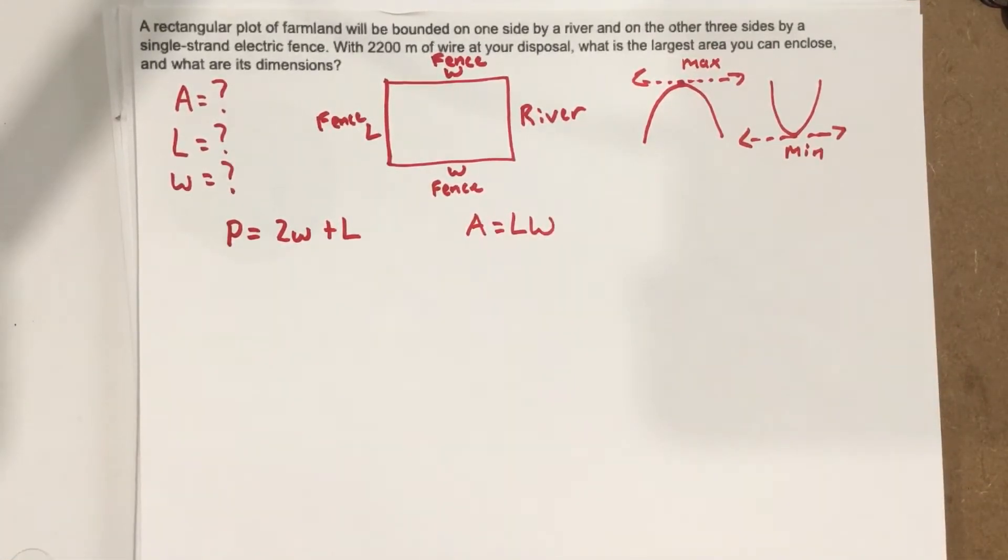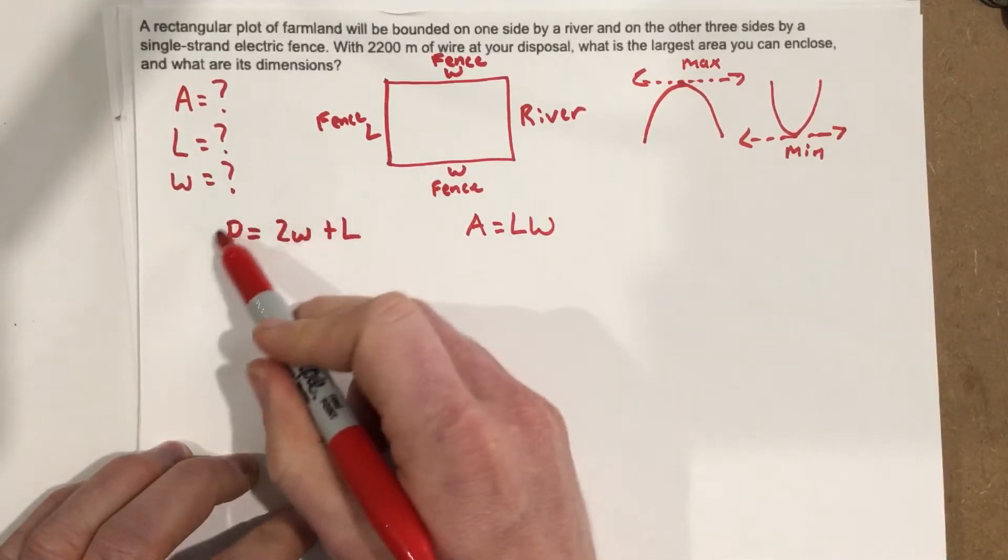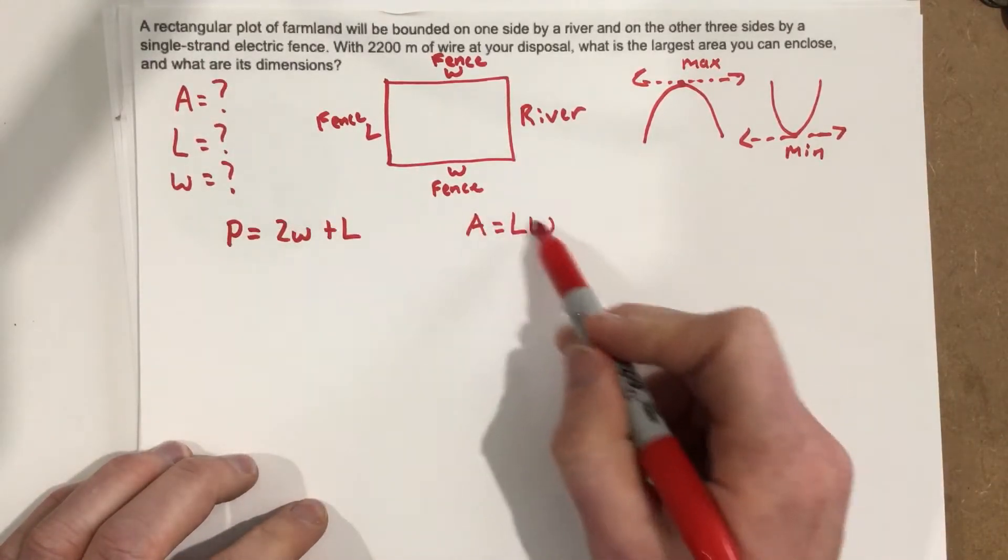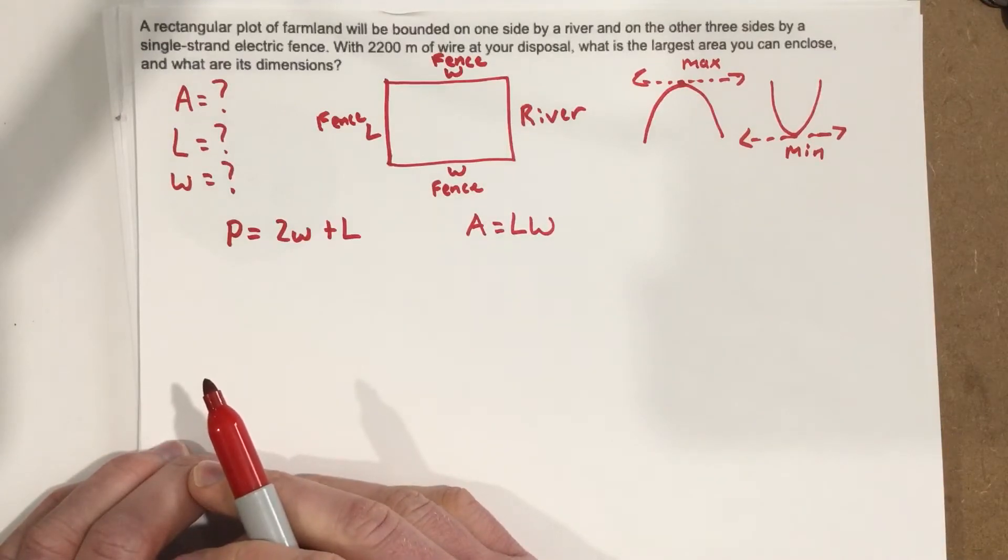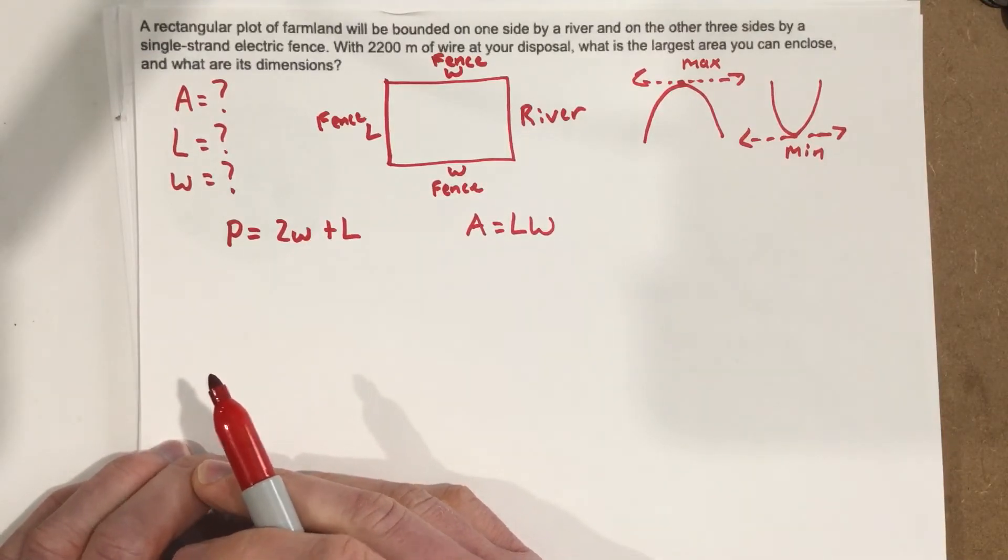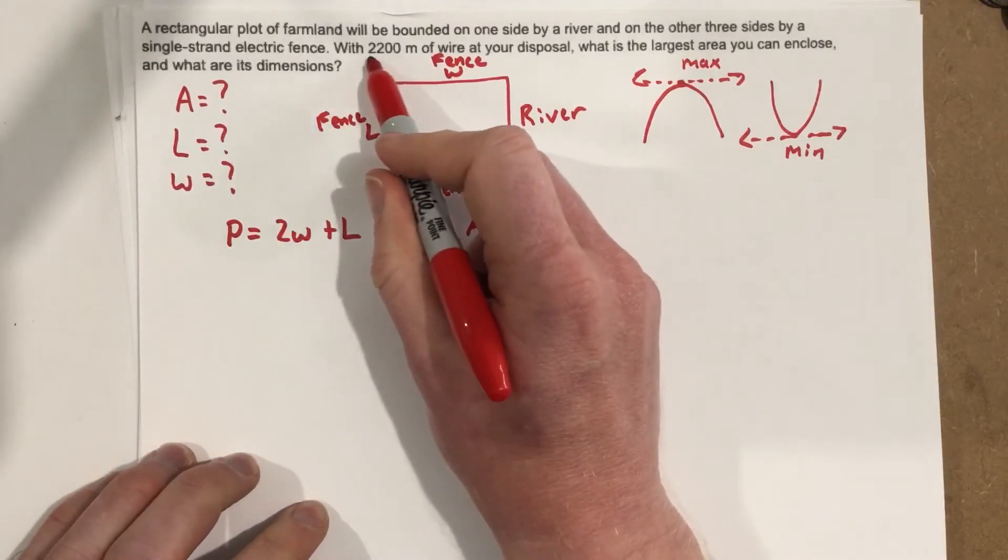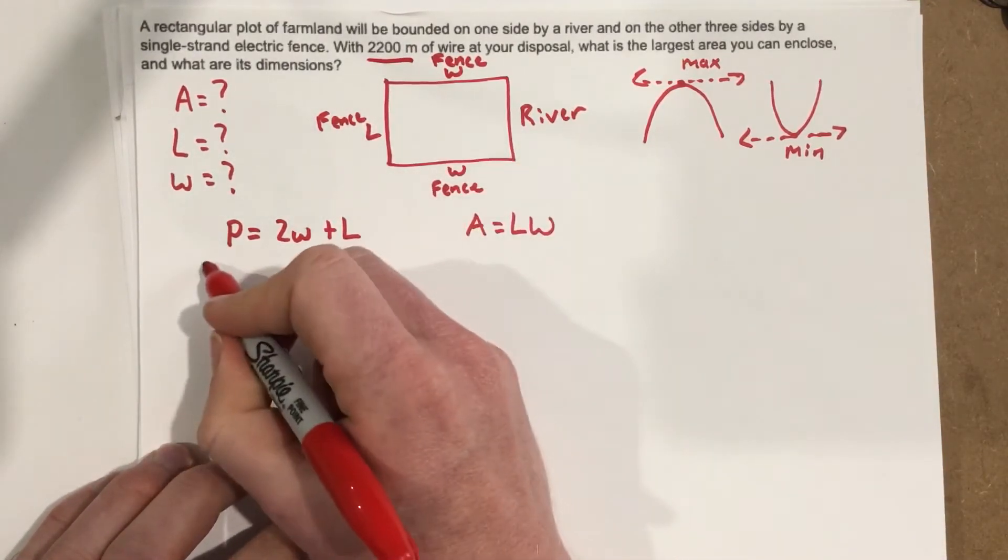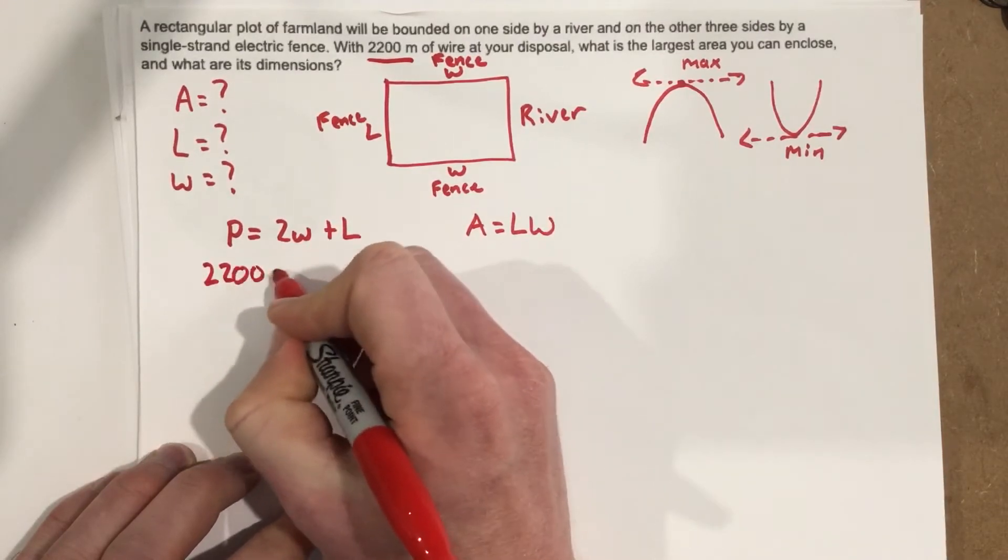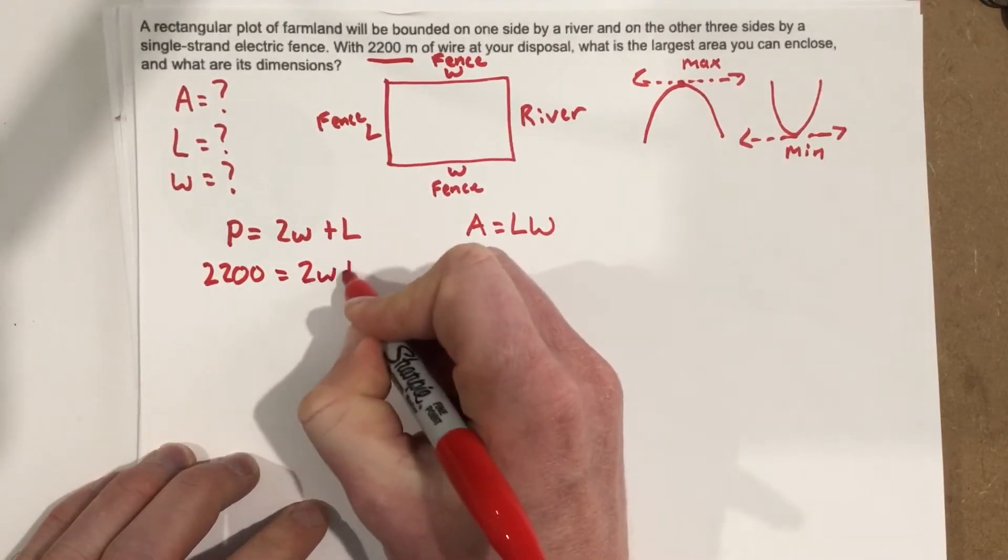Now, how do we go about doing that? Well we're going to take our perimeter equation, along with our area equation, and we're going to combine those together using systems of equations. So, they give us 2200 meters of wire, so we can say that the perimeter is 2200 equal to 2W plus L.